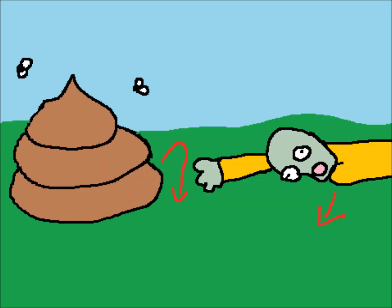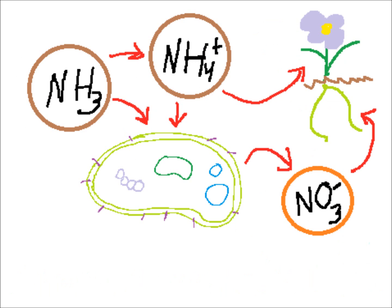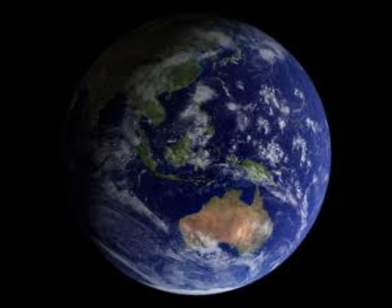Nitrogen is returned to the soil through our wastes and corpses. In ammonification, the nitrogen in these wastes is converted into ammonia. This ammonia can re-enter the old cycle or go through denitrification, where it is returned to the atmosphere as nitrogen gas or nitrous oxide. And so the earth revolves in a beautiful cycle of life.